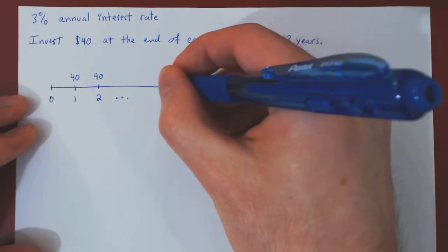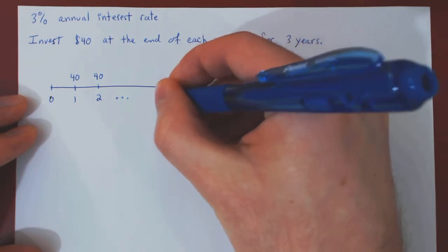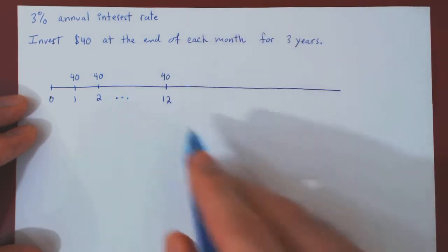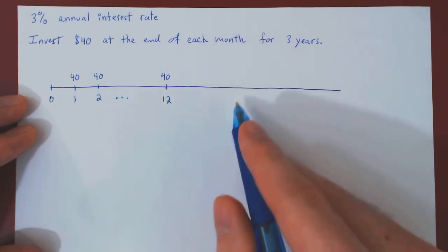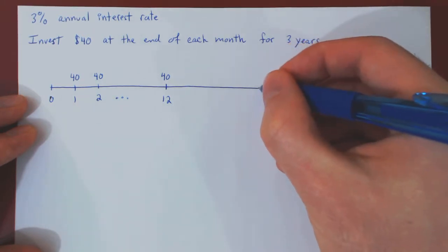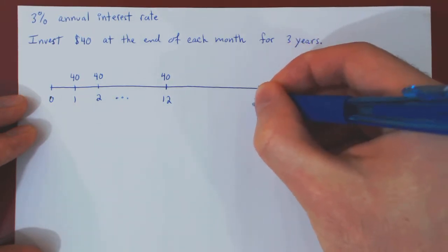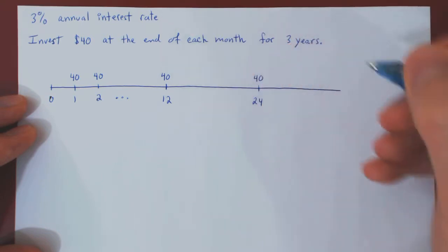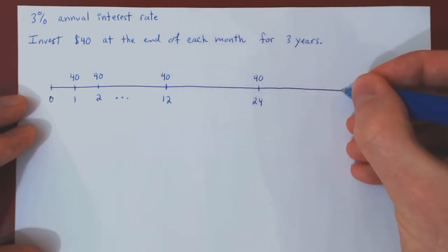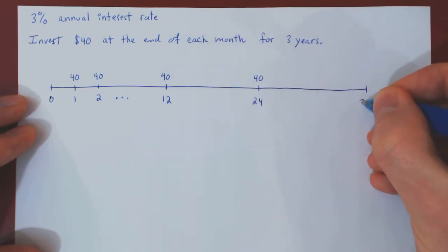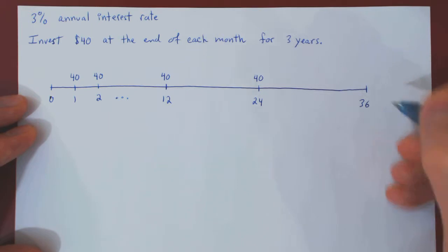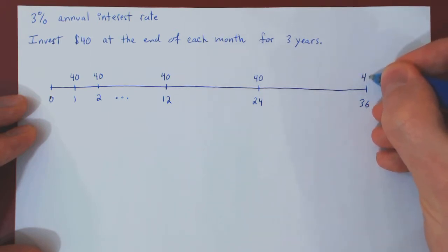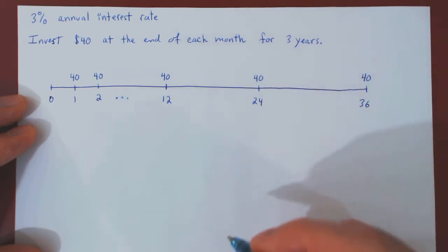The key markers will be every multiple of 12 up to 36. So at the end of year one, after 12 months, we still invest $40. After two years, we are up to 24 months — still investing $40 at the end of each month — and we will be concluding after three years, therefore after 36 months, with a final investment of $40.